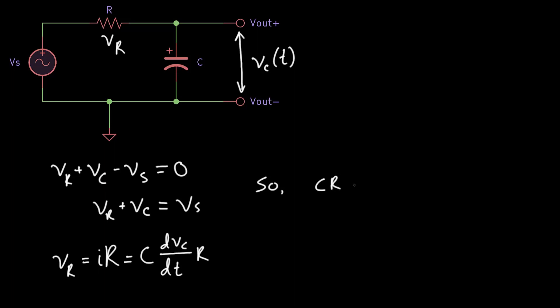We don't need to rewrite Vs, because we're assuming it's an arbitrary input voltage signal, unrelated to the dynamics of the RC filter.